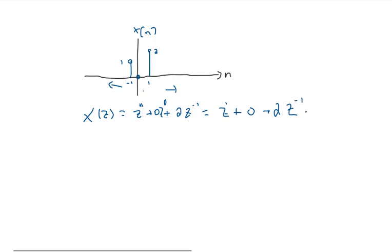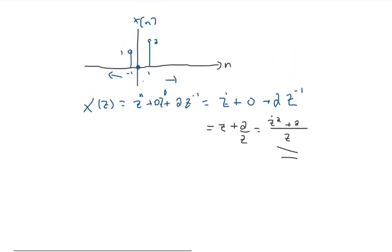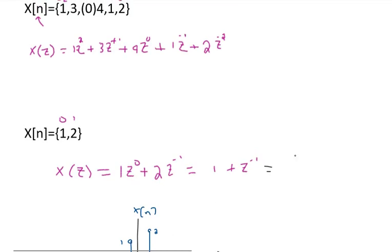And equals Z minus 1. In this final answer, we can continue and find this answer here. For example, this one is 1 plus 1 over Z. Z plus 1 over Z.